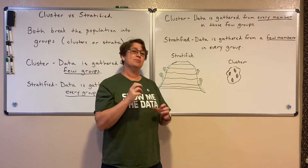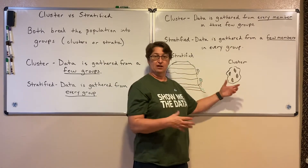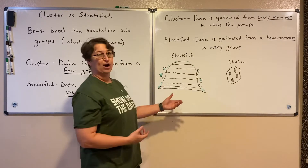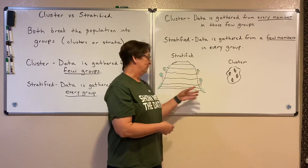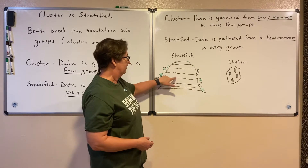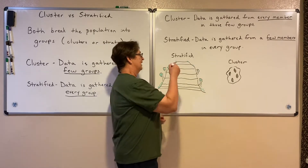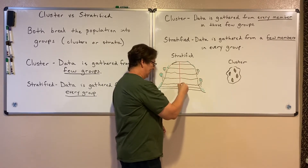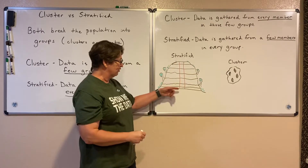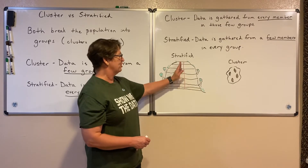To help keep it straight in my head, I picture a mountain and a peanut cluster — a chocolate that has pecans in it. Here we have a mountain with different layers of dirt, or strata. A drill comes along and collects a portion, a sample of that data, from every single one of those strata. So we get a little bit of dirt from every single one of those groups.